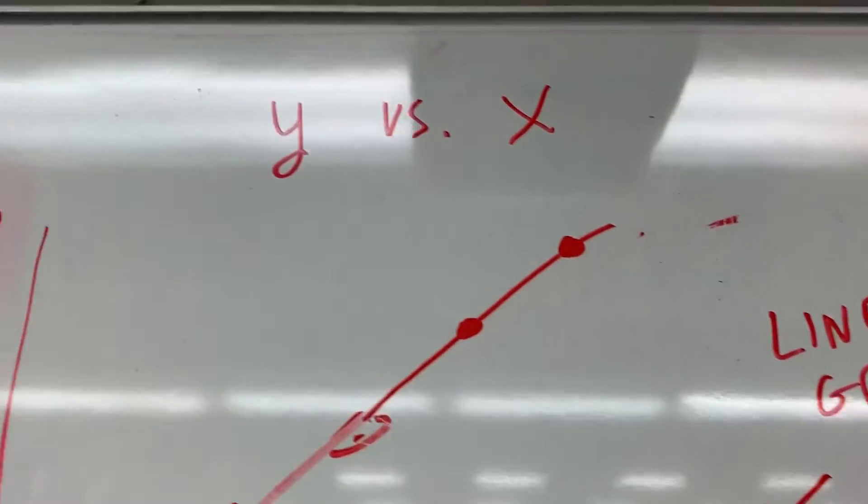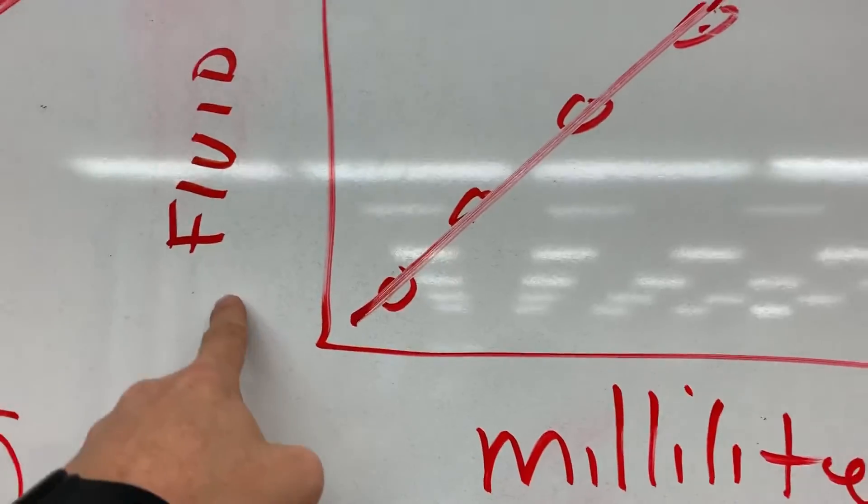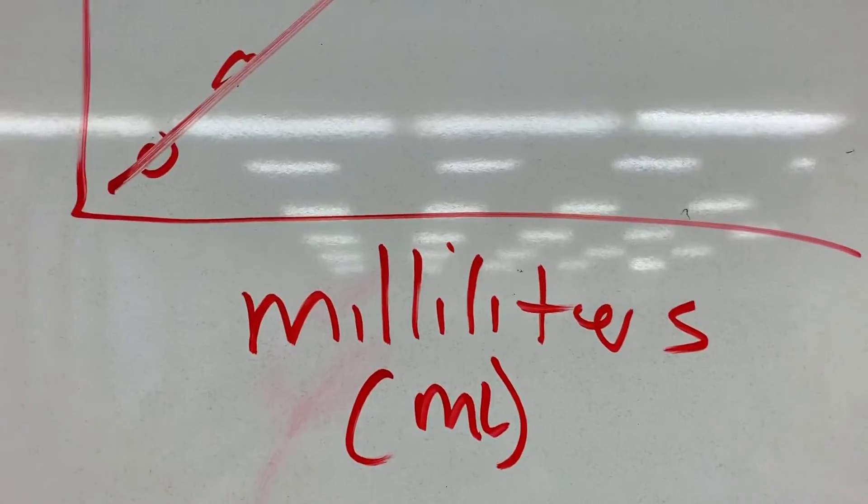And then a title, which is Y versus X - which again is the Y-axis versus, you write that unit out versus the unit written out for milliliters.